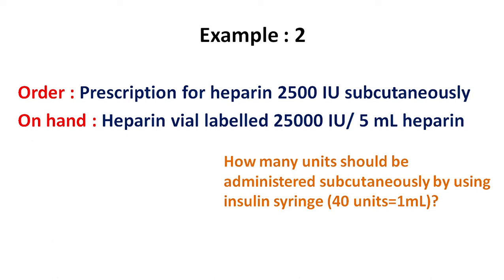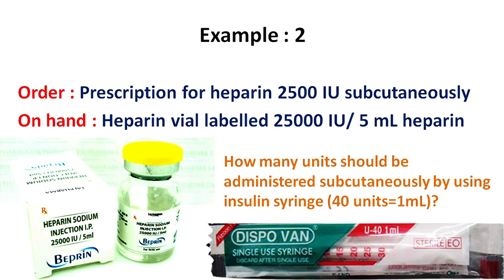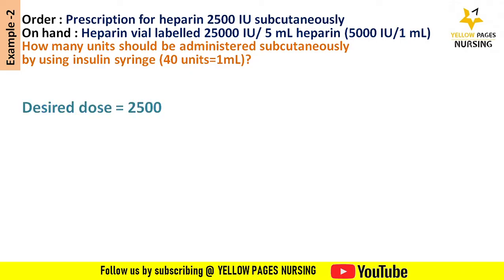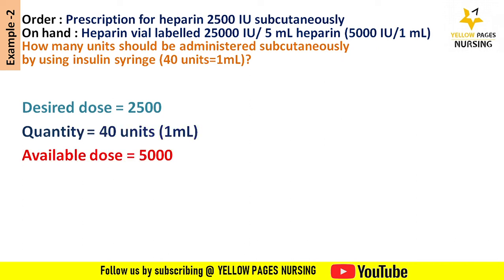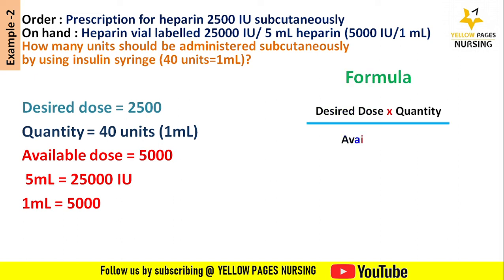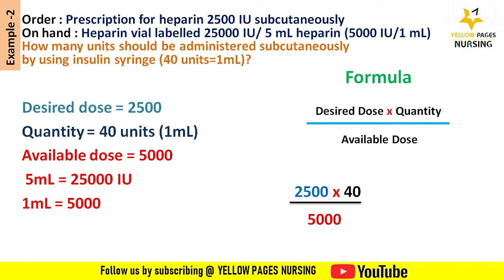As per the doctor's order, the desired dose is 2500. The quantity will be 40 units equals 1 ml. The available dose is 5000, because we are calculating for 1 ml — if 25,000 international units is contained in 5 ml, then 1 ml contains 5000. Applying all into the formula, we get the answer: 20 units.